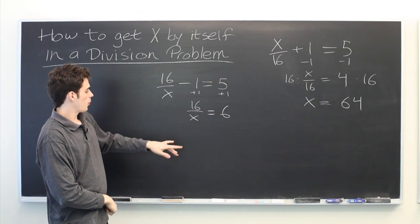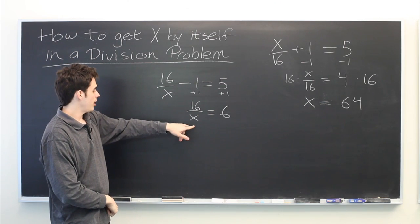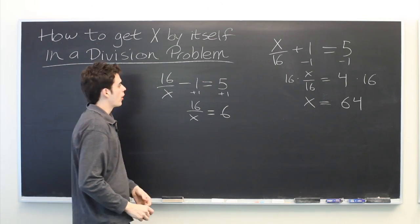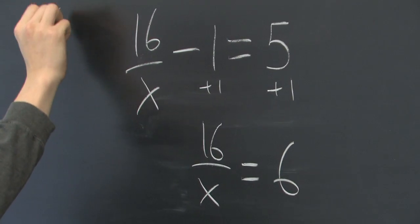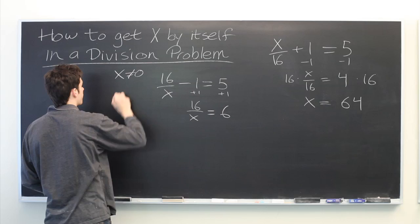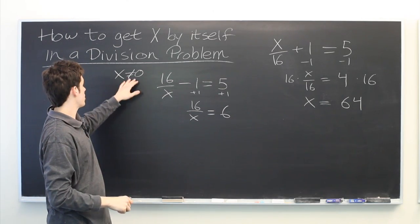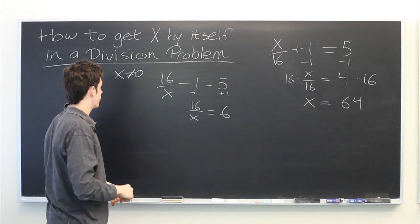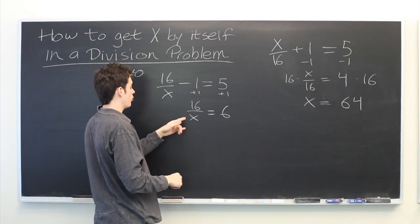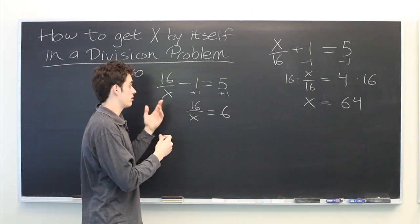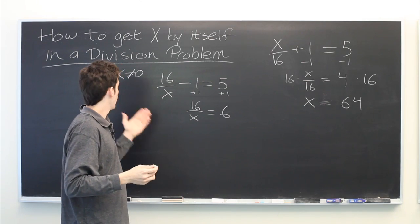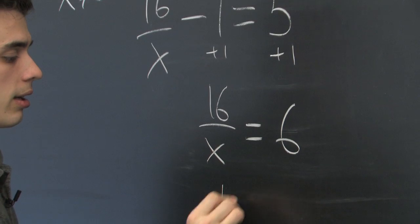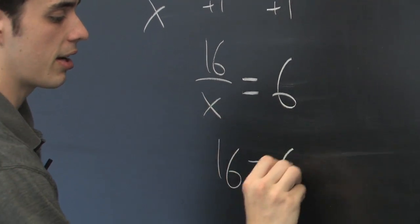Now here, we can multiply both sides of the equation by x. But in doing so, we're assuming that x is not equal to 0. If x were equal to 0, this expression would be undefined, and then multiplying both sides by x would no longer make this true. So, assuming x is not equal to 0, we can get 16 equals 6x.